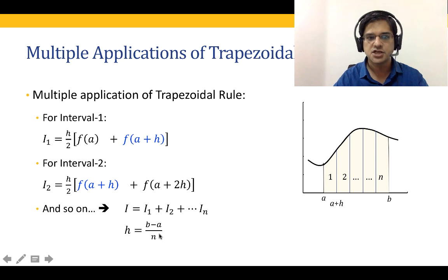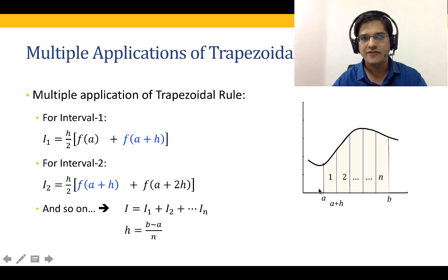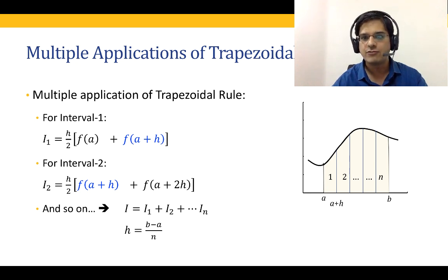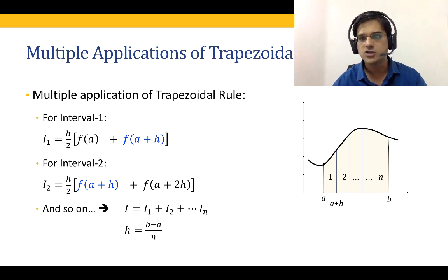The step size H is B minus A divided by N. When we have N intervals, we are going to have N+1 points on the X axis. For a single application of the trapezoidal rule we have two points A and B. For two applications we have A, the midpoint, and B — that's three points for two intervals. Three intervals will have four points, four intervals will have five points, and so on. N intervals will have N+1 points on the X axis.